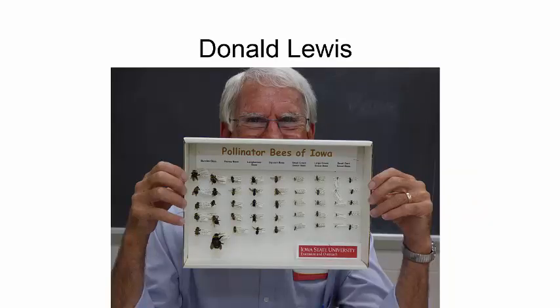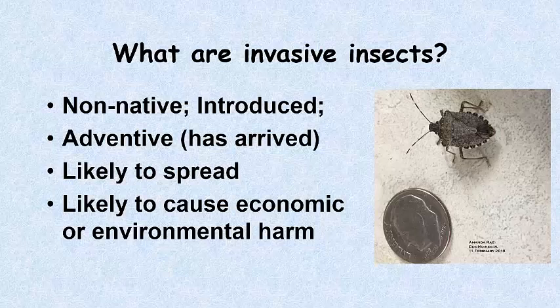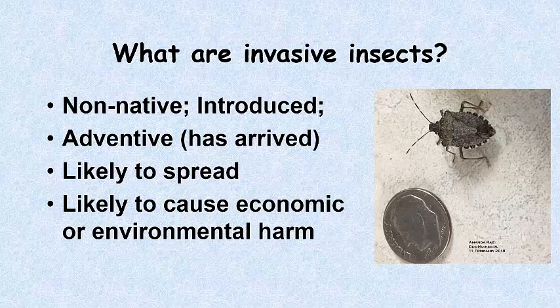Our first presenter is Donald Lewis. Hello, my name is Donald Lewis, Professor of Entomology and Extension Entomologist at Iowa State University, and today we're going to talk about a few of Iowa's latest and greatest invasive insects. Invasive insects are pests that were not originally here in Iowa or the United States — they have come from somewhere else and are now established on this continent. They are likely to spread because they find a favorable habitat without many natural controls, and they are likely to cause economic or environmental harm.